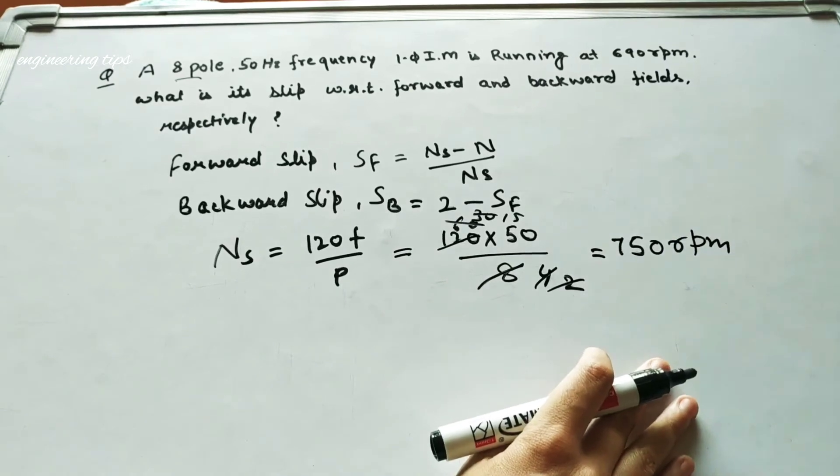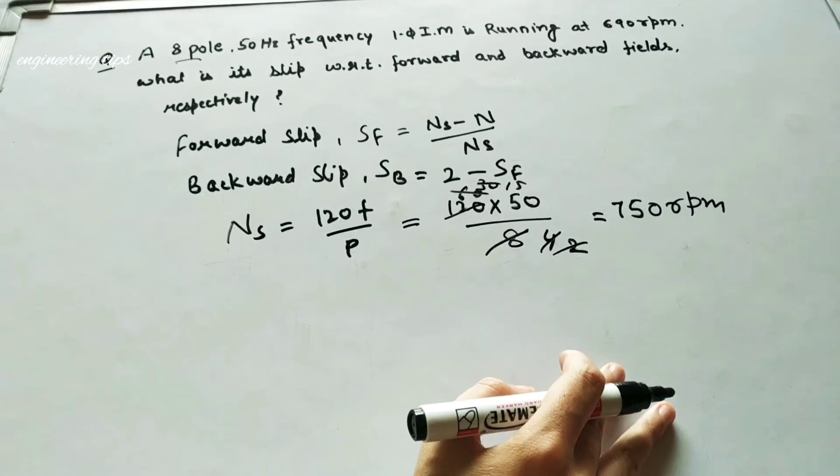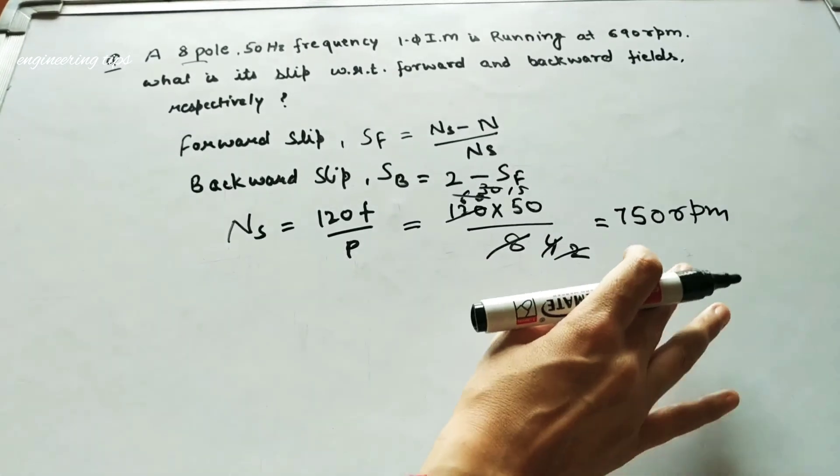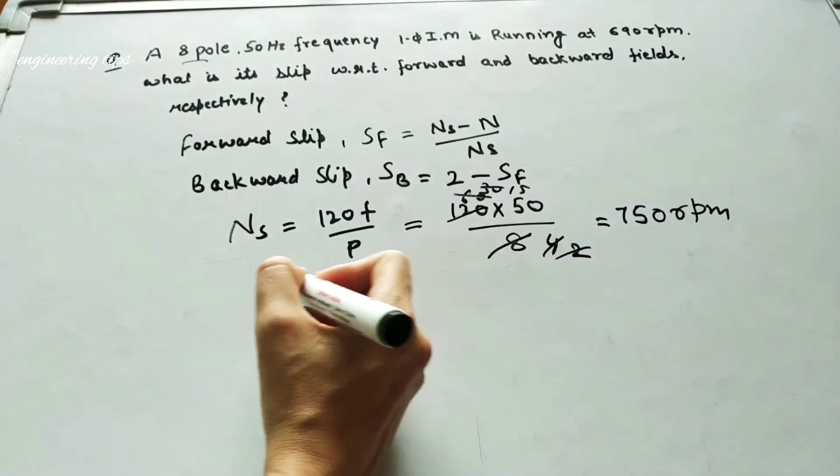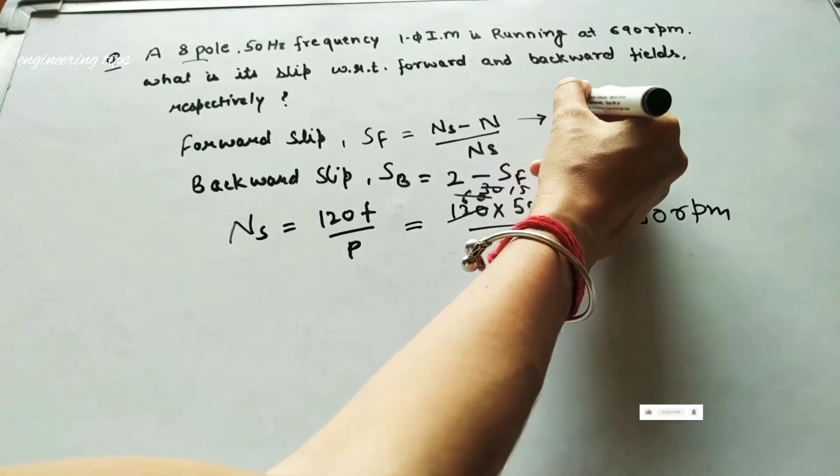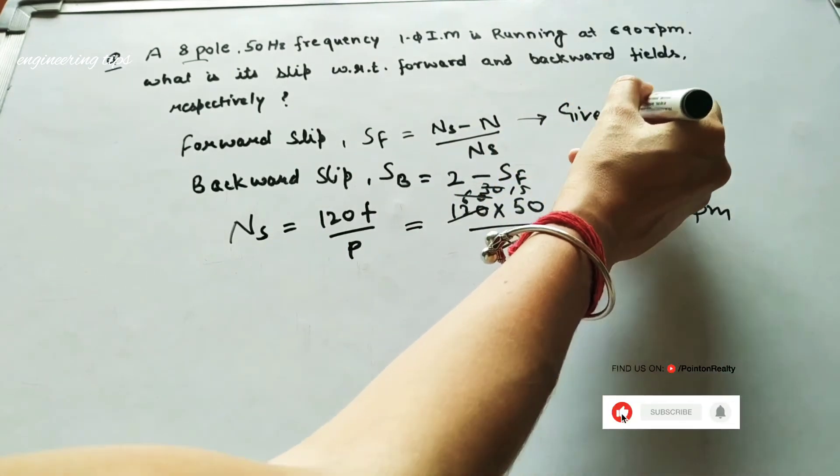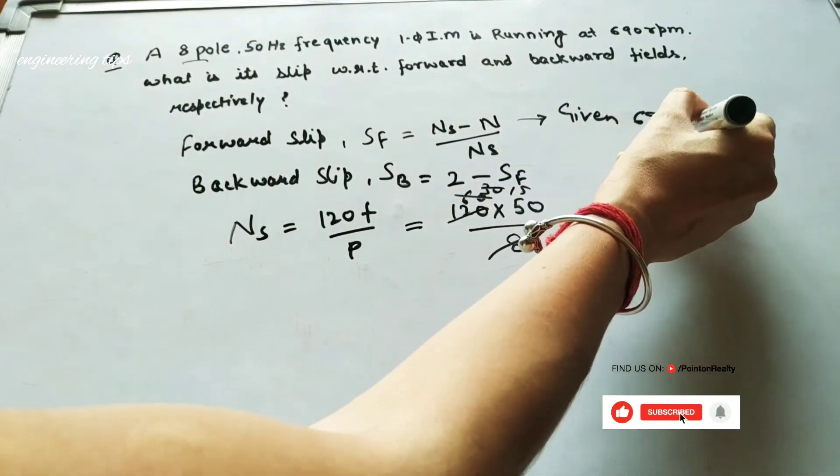That is 750 RPM. Now NS is 750. Synchronous speed is 750, and N is given as 690 RPM.